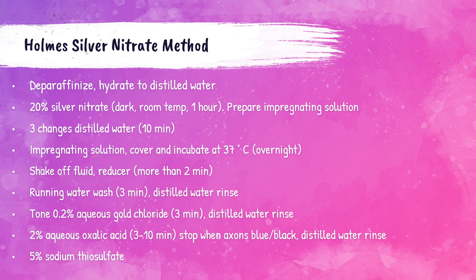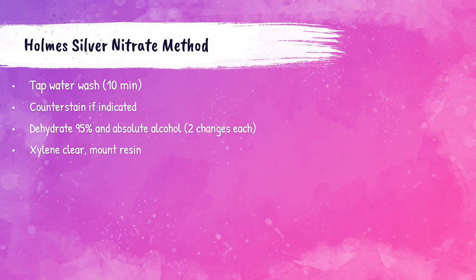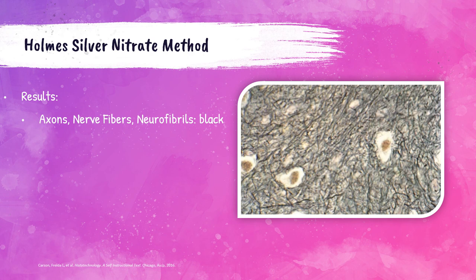Wash sections in tap water for 10 minutes. If counterstaining is indicated, it can be performed after this step. Dehydrate with 95% and absolute alcohol using two changes each, clear in xylene, and mount with synthetic resin. When stained with the Holmes silver nitrate method, axons, nerve fibers, and neurofibrils will all be black. A photo shows CNS tissue with black axons and unstained neuron cell bodies surrounded by unstained artifactual space.